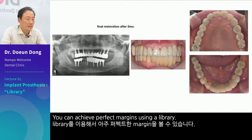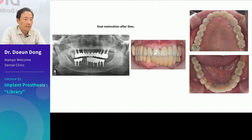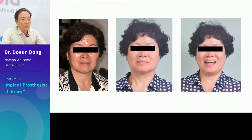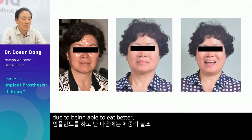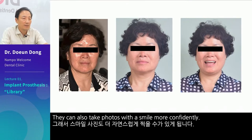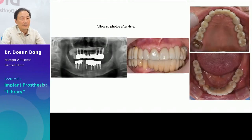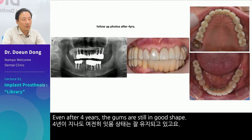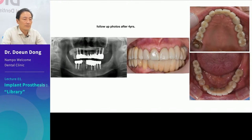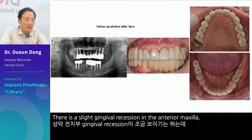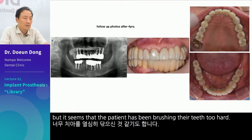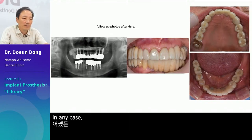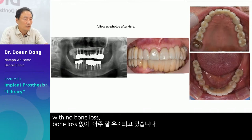After about five months, patients usually gain weight after implant placement due to being able to eat better. They can also take photos with a smile more confidently. This is a photo taken four years later. Even after four years, the gums are still in good shape. There is a slight gingival recession in the anterior maxilla, but it seems that the patient has been brushing their teeth too hard. In any case, the posterior implants are maintained very well with no bone loss.